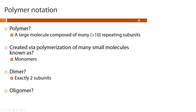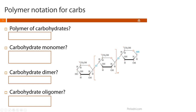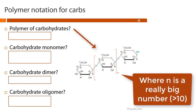If we have three to ten monomers attached together, that's what we call an oligomer. Depending on who you ask, the definition for an oligomer might be two to ten or three to ten subunits — either answer is fine for this class. So how do we apply polymer notation to carbohydrates?